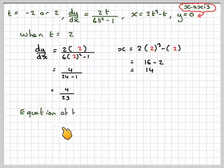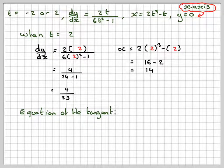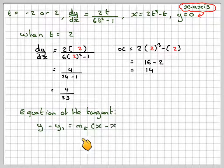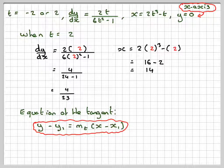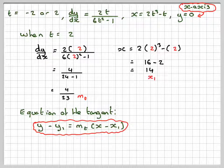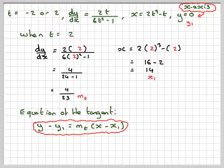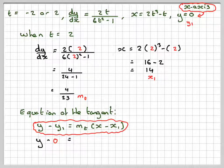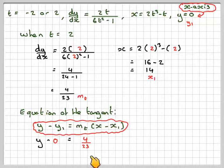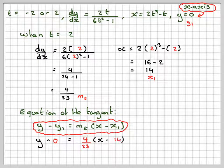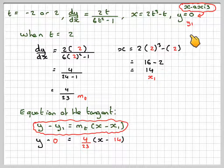The equation of the tangent using y minus y1 equals m(x minus x1) will be y minus 0 equals 4 over 23 times (x minus 14), putting the right values in. So y minus y1 is 0, the gradient is 4 over 23, and x1 is 14.